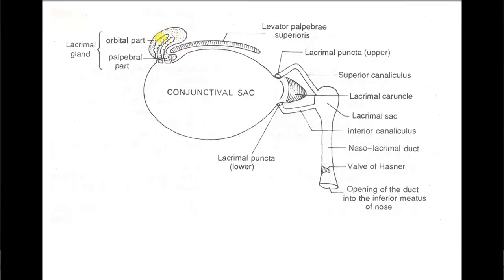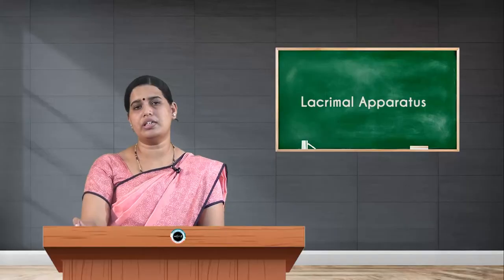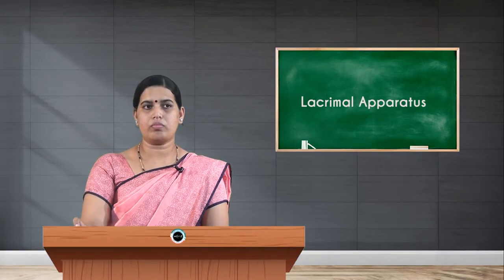The lacrimal gland is located on the lateral side in the fossa of the orbit. It has got two parts: the orbital part, which is the larger part, and the palpebral part, which is the smaller part. It is roughly J-shaped, and the two parts are separated partly by the levator palpebrae superioris muscle. The excretory ducts arising from the orbital part cross the palpebral part and lead to the conjunctival sac, then to the lacrimal puncta, leading via superior and inferior canaliculi to the lacrimal sac, and draining to the nasolacrimal duct, which opens into the inferior meatus of the nose. This nasolacrimal duct is guarded by a valve called the valve of Hasner.